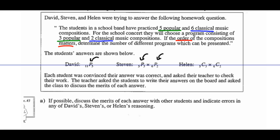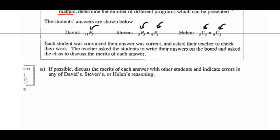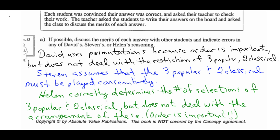Stephen recognizes permutations are important and separates popular from classical — 5P3 times 6P2 — but this assumes the three popular and two classical must be played consecutively, which isn't stated. Helen correctly determines the number of selections of 3 popular and 2 classical using combinations, but she doesn't deal with arranging the five chosen songs, so she fails to account for the importance of order.